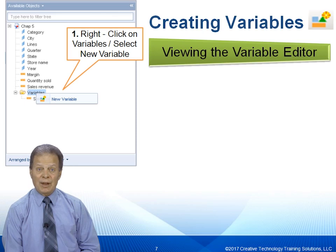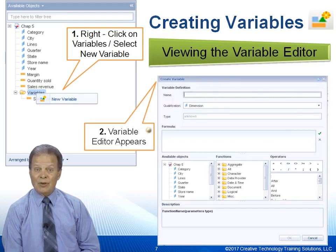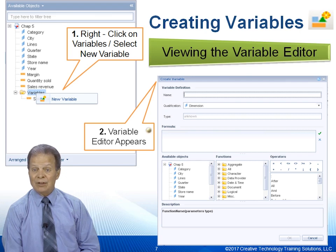To create a variable, here's an example: select New Variable from the variables tab with a right-click of your mouse. Alternatively, if you go to the Data Access tab on top and to the right side, there's also a New Variable feature there. The variable editor opens up, and one of the first things you should get into the habit of doing is putting in a name for your variable. It will not let you click OK until you've put a name in and defined some type of calculation in the formula section of the variable editor.